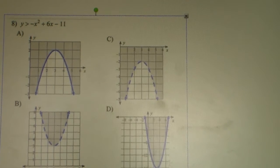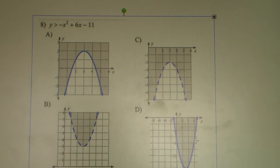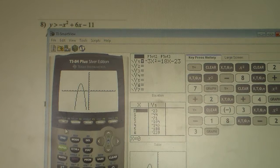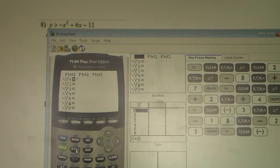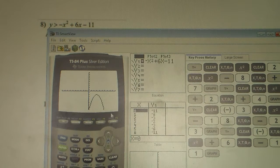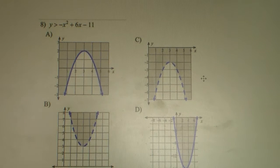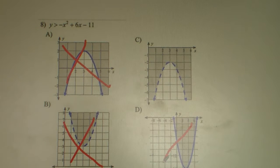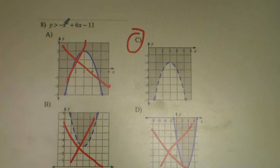Number 8. We type the equation into the graphing calculator. We see the majority of the parabola is in quadrant 4. We have a negative parabola, so D is crossed out because it shows a positive parabola. Y is greater than negative X squared — when Y is greater than a negative X squared, it's going to be shaded above the parabola. So the correct answer is C.